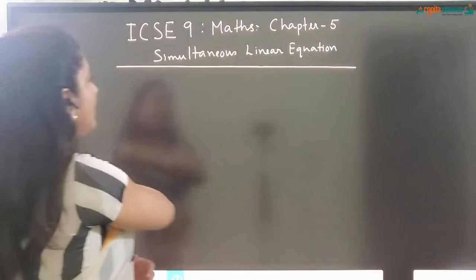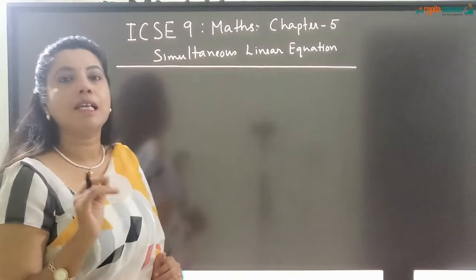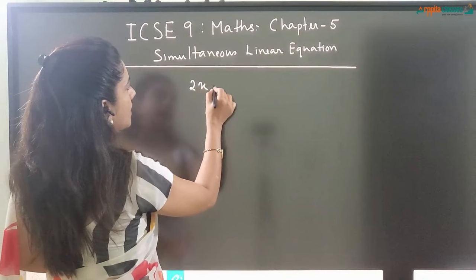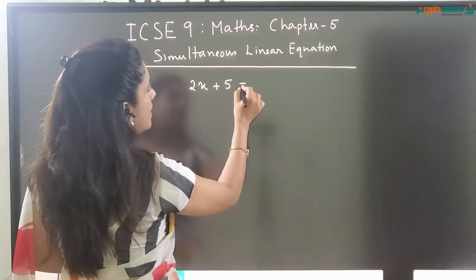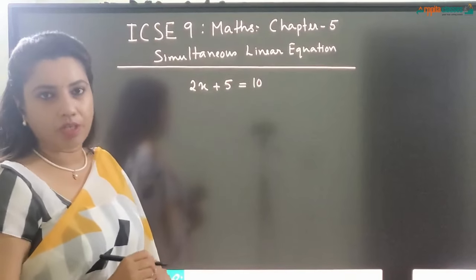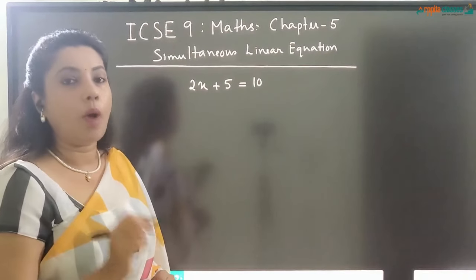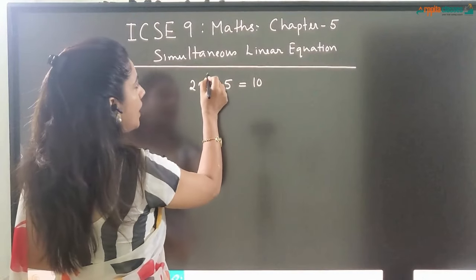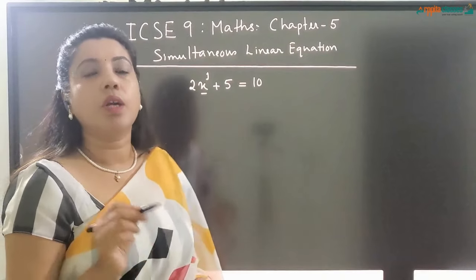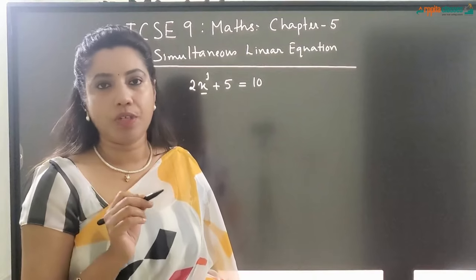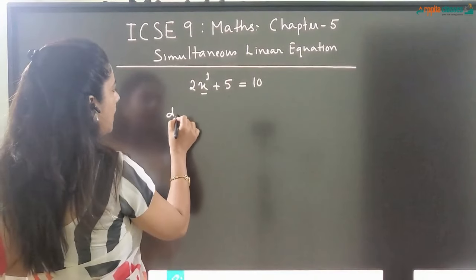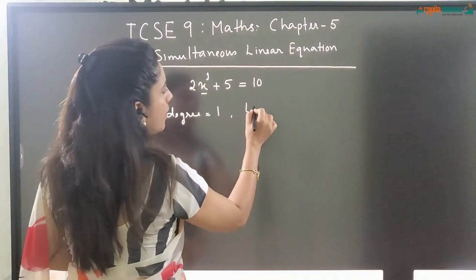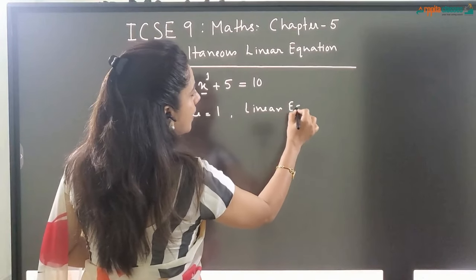What is simultaneous linear equation? First of all we will know what is a linear equation. Any equation in the form of say 2x plus 5 is equal to 10 is a linear equation — this is a linear equation with one variable. Why? Because the variable has got degree 1. So whenever the variable has got degree 1, it is called a linear equation. So if the degree of the equation is 1, then the equation is called a linear equation.